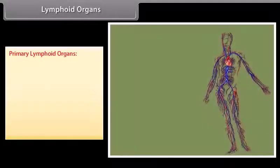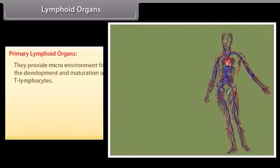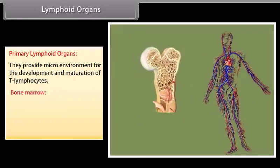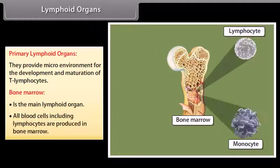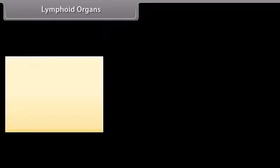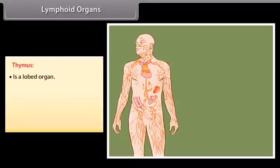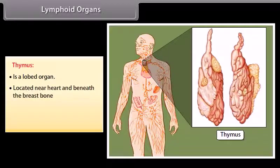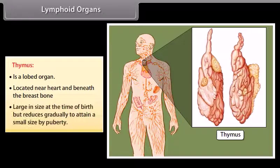Primary lymphoid organs provide a microenvironment for the development and maturation of T-lymphocytes. Bone marrow is the main lymphoid organ where all blood cells including lymphocytes are produced. The thymus is a lobed organ located near the heart and beneath the breastbone; it is large at birth but reduces gradually to a small size by puberty.